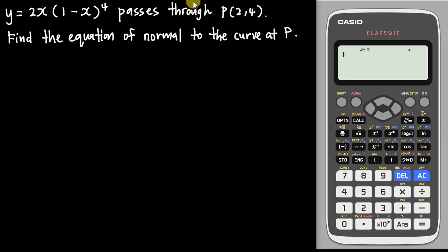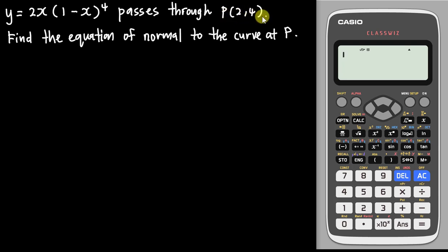In the exam you might have a question similar to this — they will give you an equation of a curve and tell you this curve is passing through one of the coordinates, which is point P at (2, 4), and then ask you to find the equation of the normal to the curve.